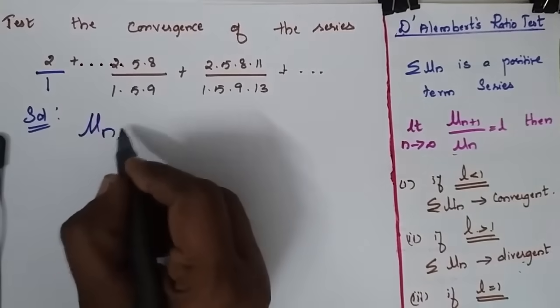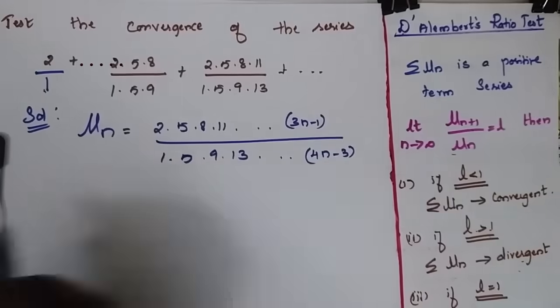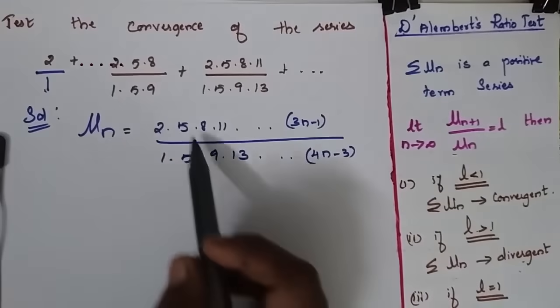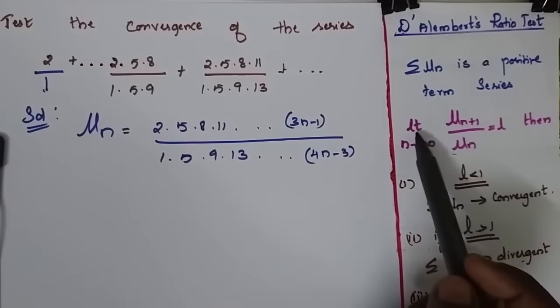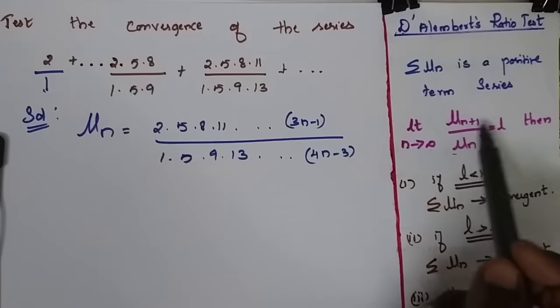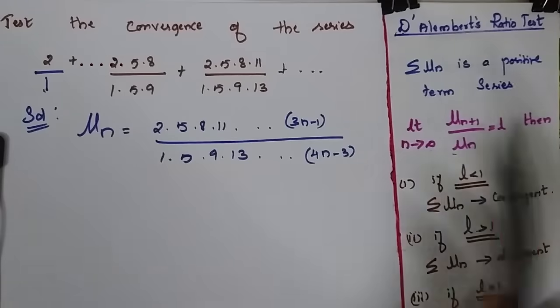My un is the general term. Now I'm going to check the convergence by ratio test. So for this I have to find limit n tends to infinity of un plus 1 by un.